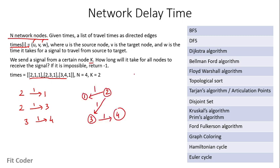We have 4 vertices and are sending the signal from node K, where K is 2 — our start node. We can use two algorithms here: Dijkstra and Bellman-Ford, because none of the edges are negative, so both can compute the shortest distance. With start vertex 2, computing the shortest distance using Dijkstra or Bellman-Ford tells us how much time it takes for all nodes to receive the signal. In this manner, these shortest path algorithms can solve the network delay time problem.